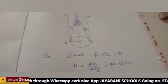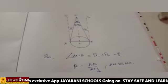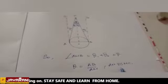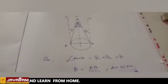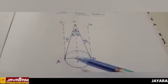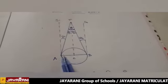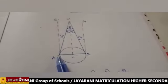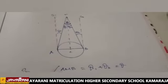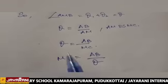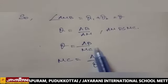AM is approximately equal to MC because we have to find out the large distance AM. When compared to AM, this value is very small. So, AM is approximately equal to MC. From that, we get the equation, theta is equal to AB by MC.